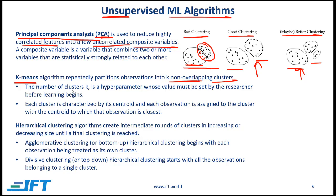The number of clusters, K, is a hyperparameter whose value must be set by the researcher before the learning begins. Each cluster is characterized by its centroid, and each observation is assigned to the cluster with the centroid to which that observation is closest.